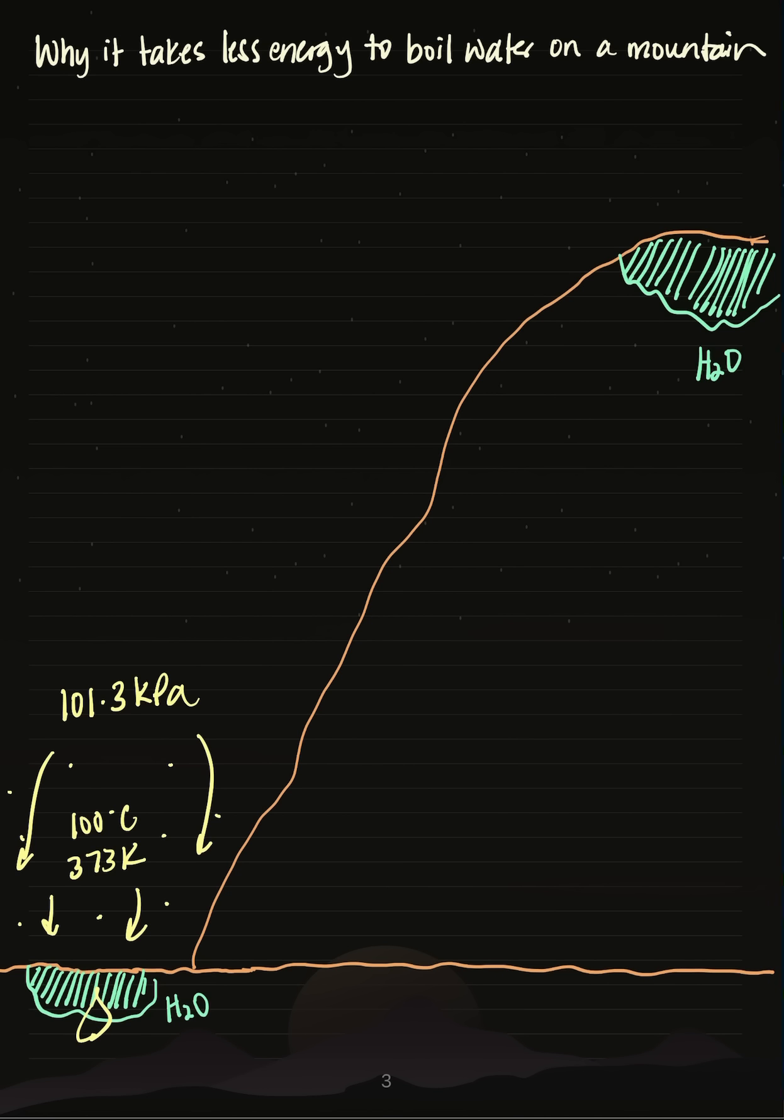As you go up a mountain, the air pressure decreases. Let's pretend the air pressure up here is 50 kilopascals. That means I'm still going to need energy to break the hydrogen bonds in liquid water, but there's less gases up here, so less gases pushing down on the water, making its boiling point a lower temperature.